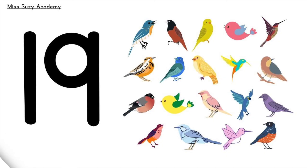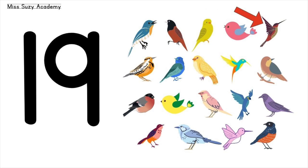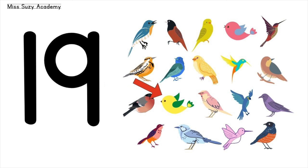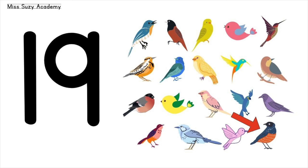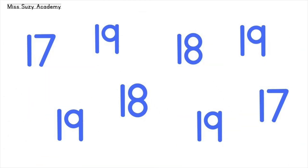19 birds: 1, 2, 3, 4, 5, 6, 7, 8, 9, 10, 11, 12, 13, 14, 15, 16, 17, 18, 19. 19 birds! Let's circle all number 19.